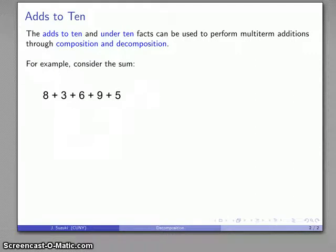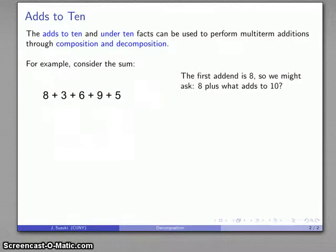Let's consider a sum like this: 8 plus 3 plus 6 plus 9 plus 5 and try to add this in your head mentally. If you're like most people, you're going to add 8 plus 3, 11 plus 6 plus 9, and you're going to add it left to right and figure out what the value is.